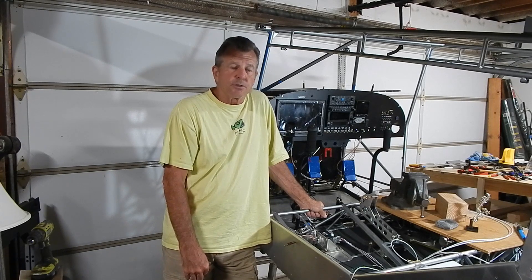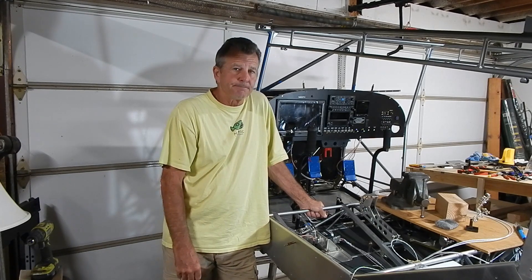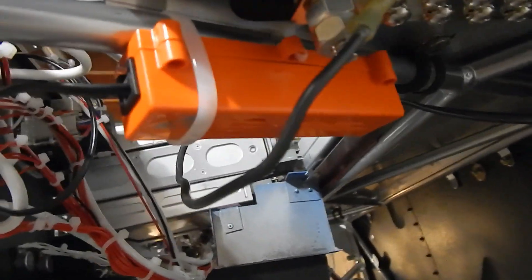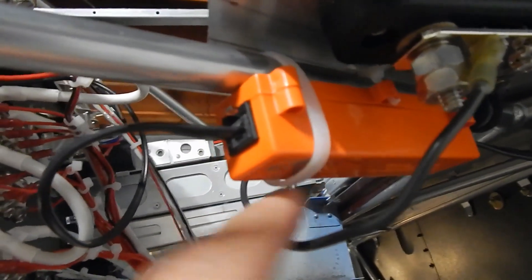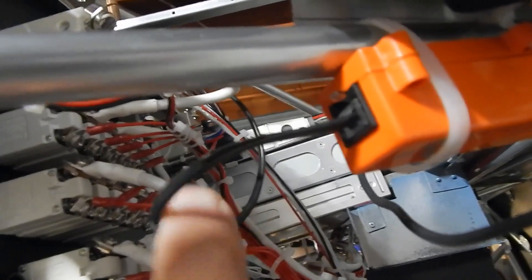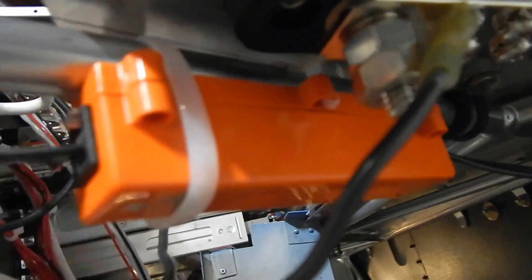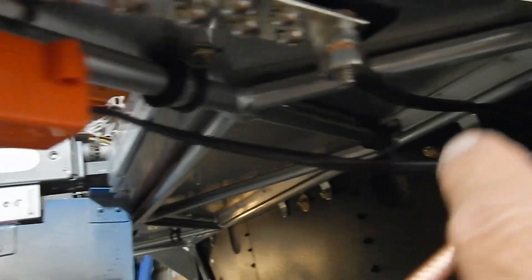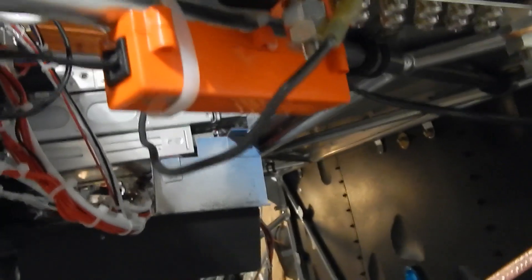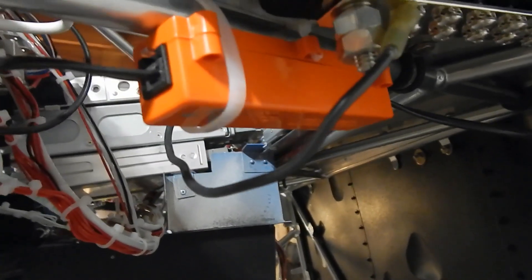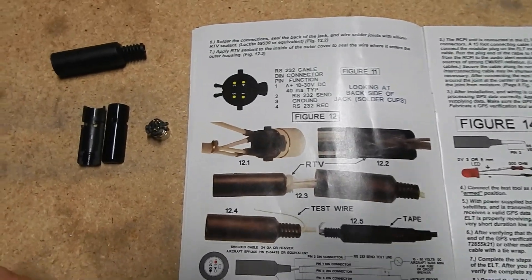I decided to zip tie my ELT siren or horn to the cage frame underneath the panel. This way, it's got a short cord to the ELT panel mount, and I've got access to it every ten years to switch the batteries out. I didn't want to make it completely inaccessible, so by cutting these zip ties I can drop it down, replace the batteries. The rear cord goes to the back, keeping it out of the way from the feet and legs of the passenger.